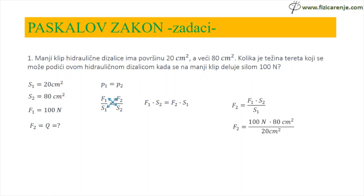Sada mogu da zamenim. Umjesto F1 pišem 100 N, a umjesto S2 — 80 cm². Umjesto S1 pišem 20 cm². 100 puta 80 je 8000, prepišem merne jedinice N·cm², a dole prepišem samo 20 cm². 8000 podeljeno sa 20 je 400, i cm² se skrati i ostaje samo N.